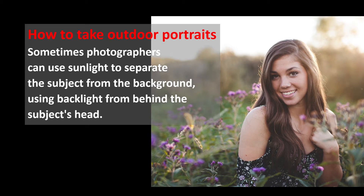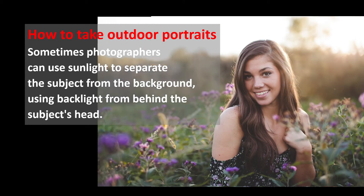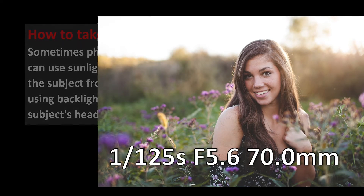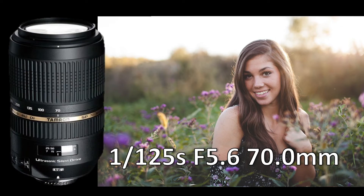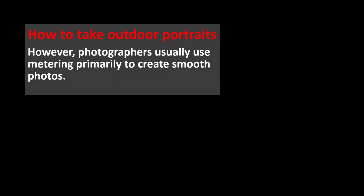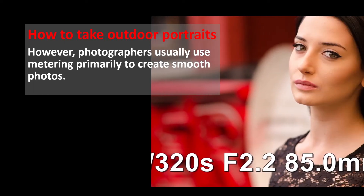Sometimes photographers can use sunlight to separate the subject from the background using backlight from behind the subject's head. However, photographers usually use metering primarily to create smooth, well-exposed photos.